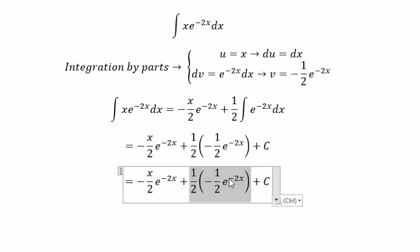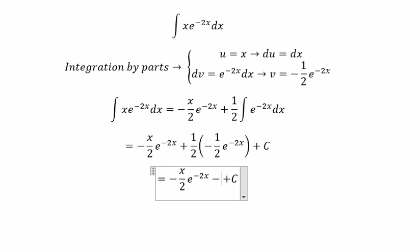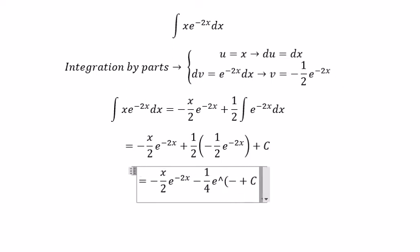And in this one, you get negative 1 over 4 e to the power of negative 2x.